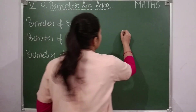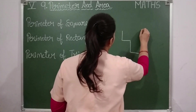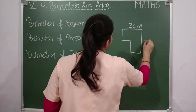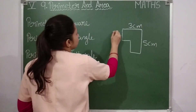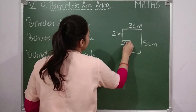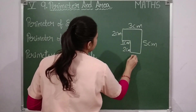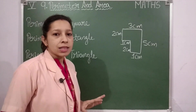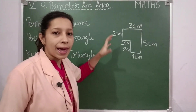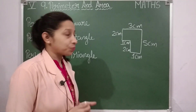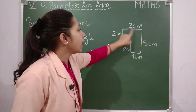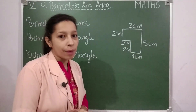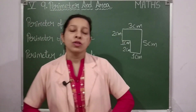Suppose such is the figure I have, and the measurements are: three centimeters, five centimeters, two centimeters, one centimeter, two centimeters, and one centimeter. This is a figure given to us. Now you are asked to find its perimeter. For finding the perimeter of this figure we will take all its sides and add them together.